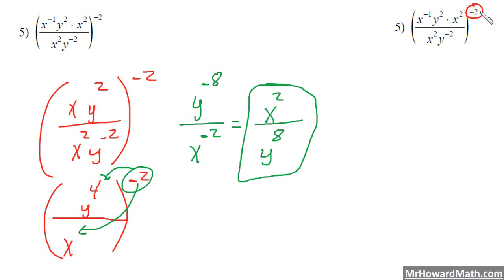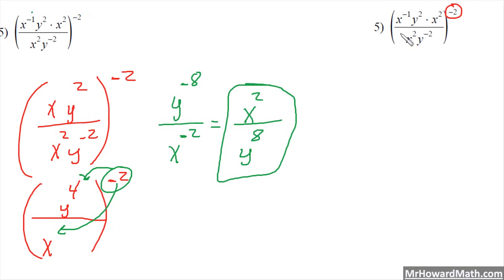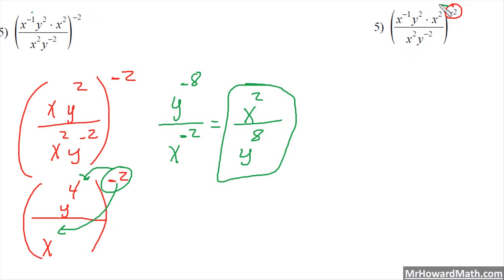We'll work the same problem again, just taking a different path. This time I'm going to bring in the negative 2 exponent to everything at the beginning and handle that part first. So the negative 2 gets multiplied by every single exponent — numerator and denominator.